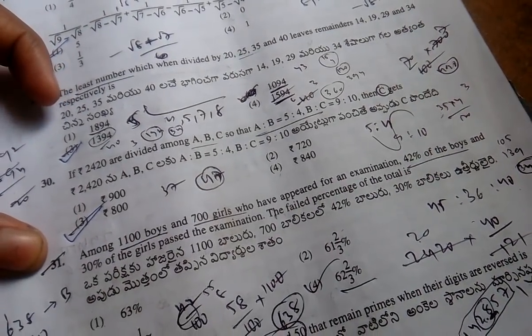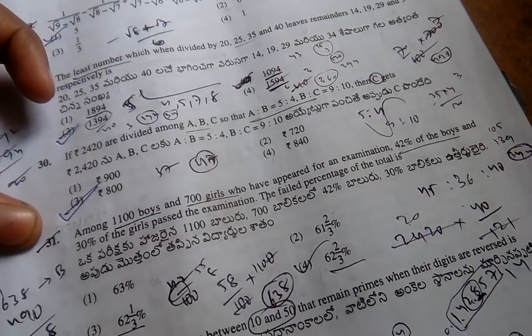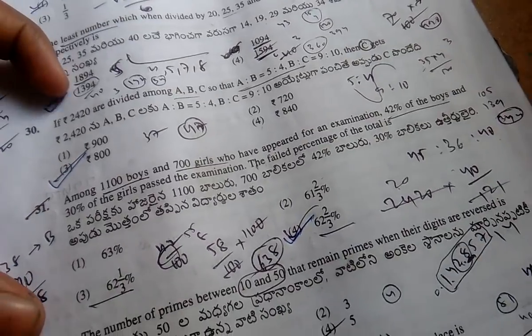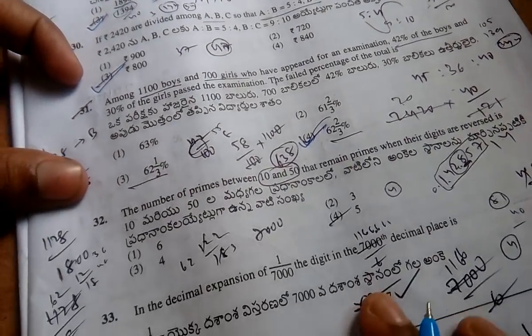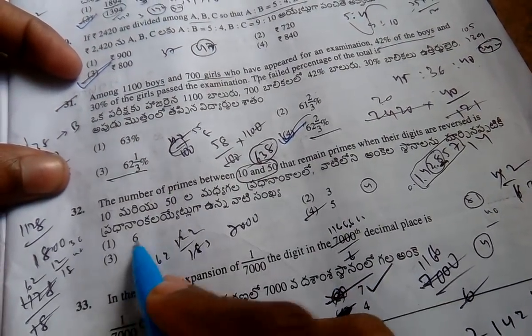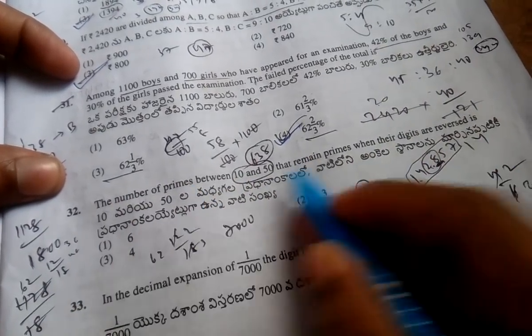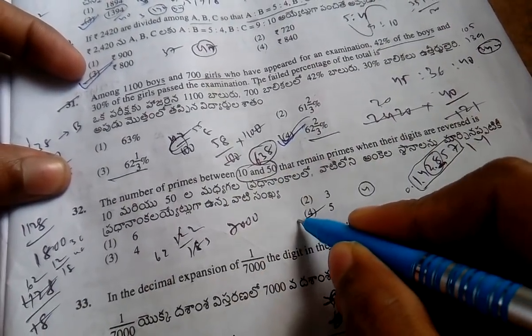Question 31 answer is 62 and 2 by 3, this is the correct answer. Question 32 is 10 to 50, that is number of primes. You can see that, answer is 5.